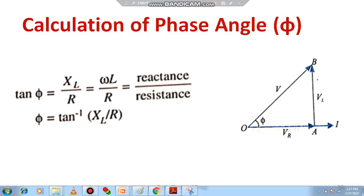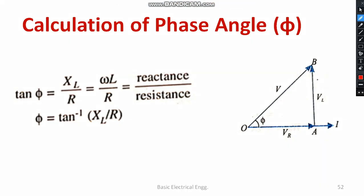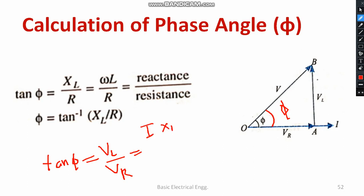To calculate the phase angle, apply the trigonometric rule to the triangle: tan φ = opposite side / adjacent side = VL / VR. Substituting VL = IXL and VR = IR, the currents cancel, giving tan φ = XL / R = ωL / R. Therefore, φ = tan⁻¹(XL / R). This is the final answer for the phase angle.